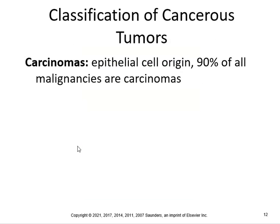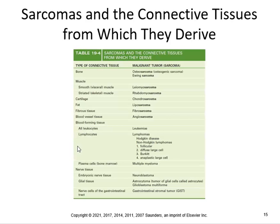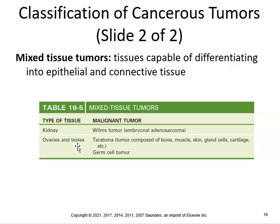Sarcomas are of connective tissue origin, making up only five percent of all malignancies. These are rare — examples include osteosarcoma, Ewing's sarcoma, liposarcomas, fibrosarcomas, and angiosarcomas. Leukemias involve leukocytes; if they involve lymphocytes, you have Hodgkin disease and non-Hodgkin lymphomas. Neuroblastomas arise from embryonic nerve tissue. Rare tumors include Wilms tumor of the kidney, and teratoma of the ovaries or testes, composed of bone, muscle, skin, glands, and cartilage.